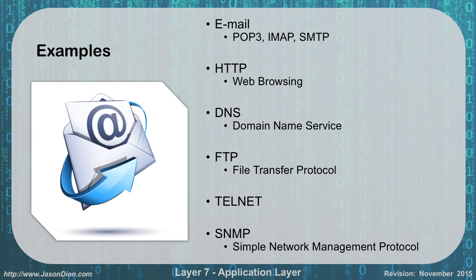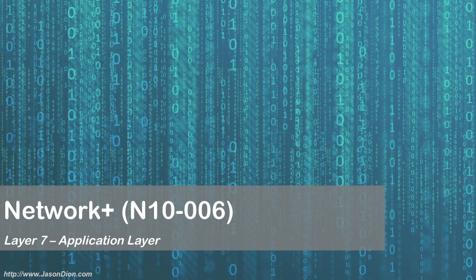Some examples: email, like I said — POP3, IMAP, and SMTP. Web browsing over HTTP. Domain Name Service from DNS. File Transfer Protocol through FTP or FTPS. Telnet services or SSH services for remote administration. Simple Network Management Protocol for management of your network devices. We'll talk about all of these later when we discuss network protocols and ports, but these are some examples of application layer things we're going to be dealing with.